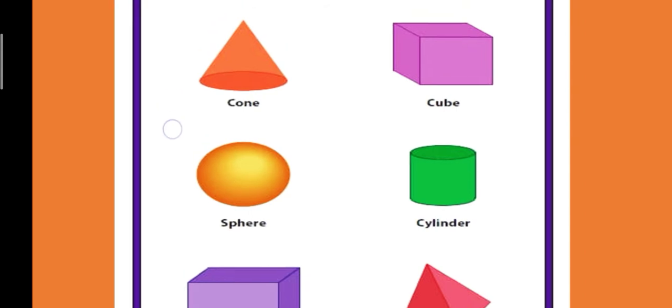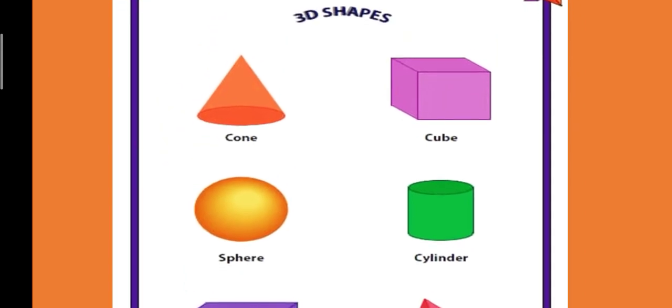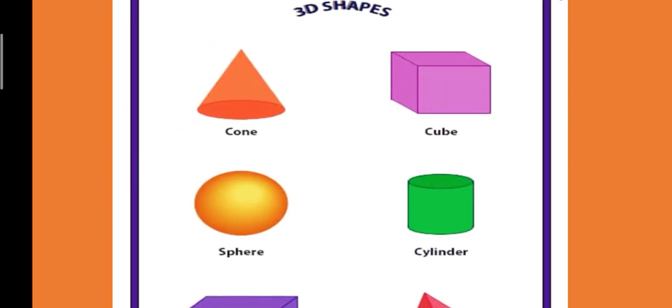पहला है आपका Cone. C-O-N-E. Cone आप लोगों ने देखा होगा — मतलब जैसे कि हम birthday का जो टोपी यूज़ करते हैं, वो cone shapes में होता है. Second one is Cube. C-U-B-E. Cube तो हम जैसे Ludo वगेरे में यूज़ करते हैं, उसे Cube बोलते हैं.